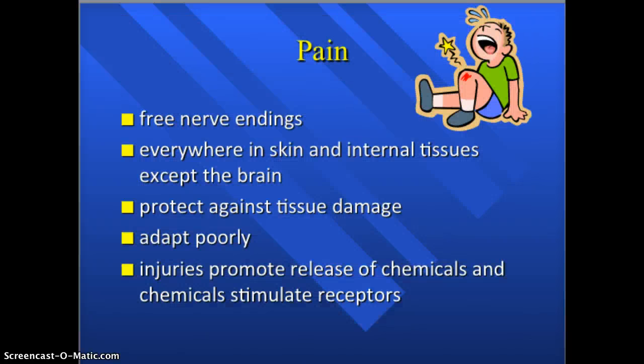Pain receptors, also called nociceptors, are free nerve endings found everywhere in your skin and internal tissues except for your brain — as seen in brain surgery videos. They protect you against tissue damage by sensing damage to any tissue, then releasing chemicals that stimulate receptors which cause you to feel pain so that you can respond to it. They adapt very, very poorly, meaning pain receptors will not stop sending action potentials over time.